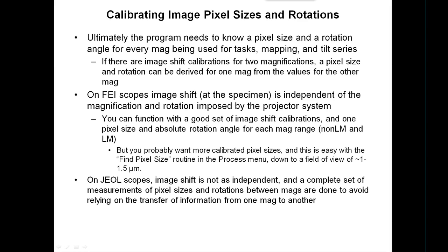That's useful if image shift is invariant and independent of magnification. On FEI scopes, it fits that assumption very nicely. The image shift happens up at the specimen and it's independent of the magnification rotations imposed by the projector system. So you can function with a good set of image shift calibrations and just one pixel size and rotation angle for each mag range — where mag range means non-low mag and low mag.